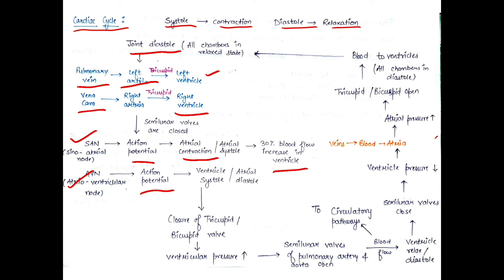During ventricular systole, the tricuspid and bicuspid valves close so that blood cannot flow back into the atria. Ventricular pressure increases as all the blood remains inside the ventricles. Then the semilunar valves open — the pulmonary artery and aorta open — and blood is pumped to different body parts. The right ventricle sends deoxygenated blood to the lungs and the left ventricle sends oxygenated blood to the body.